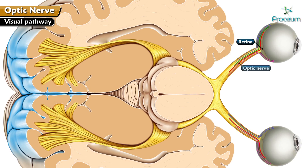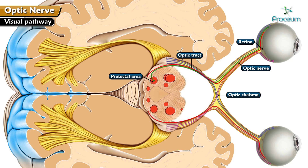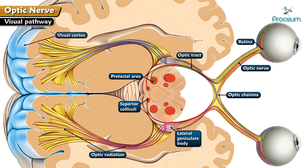Here is the schematic of the visual pathway. The axons of the ganglionic cells of the retina transmit the information to the optic nerve, through the optic chiasma, via the optic tracts. The information is relayed to the pre-tectal area, the lateral geniculate body, and the superior colliculi. The lateral geniculate body then relays via the optic radiation to the visual cortex — areas 17, 18, and 19.